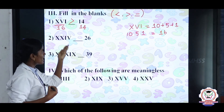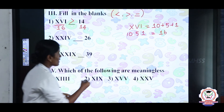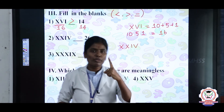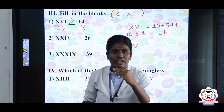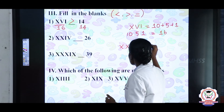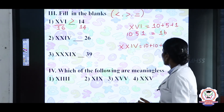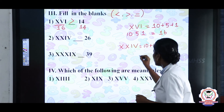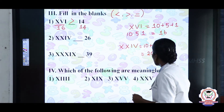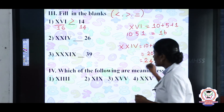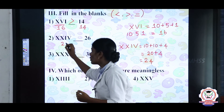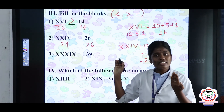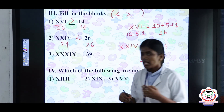The next example: XXIV compared to 26. XXIV equals 10 plus 10 plus 4, which is 20 plus 4 equals 24. We have 24 and 26. Since 26 is the greatest number, put the less than symbol.